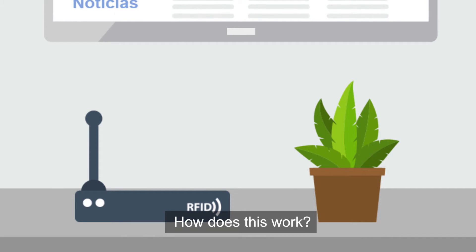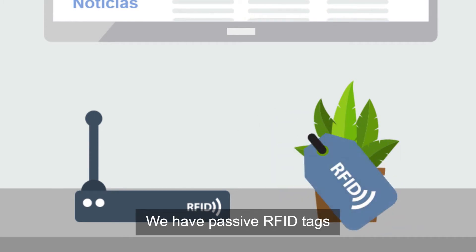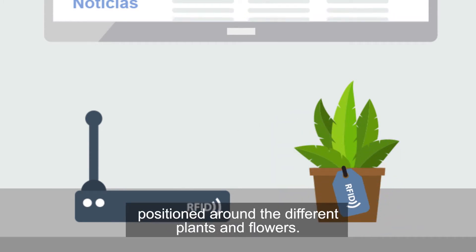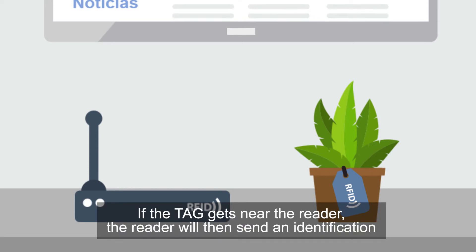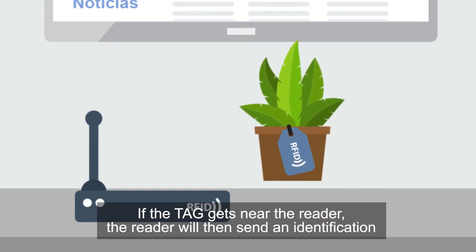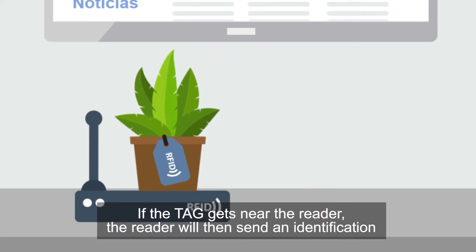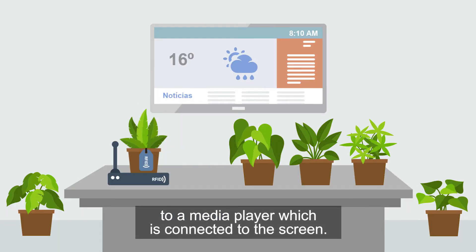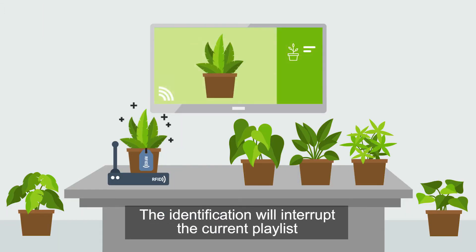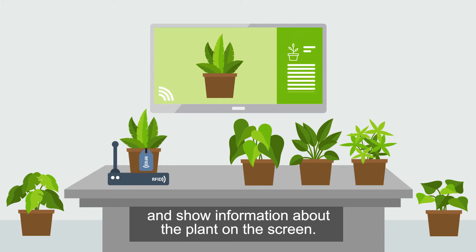How does this work? We have passive RFID tags positioned around the different plants and flowers. If the tag gets near the reader, the reader will then send an identification to the media player which is connected to the screen. The identification will interrupt the current playlist and show information about the plant on the screen.